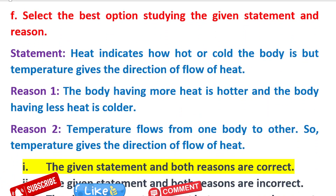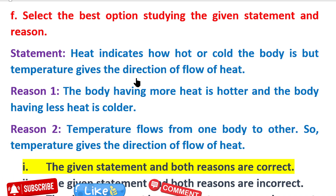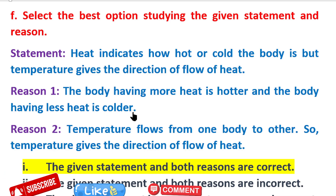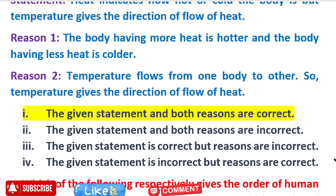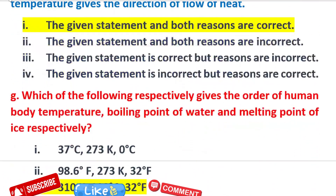Select the best option by studying the given statement and reason. The statement is: heat indicates how hot or cold the body is, and temperature gives us the direction of the flow of heat. Reason 1: the body having more heat is hotter and the body having less heat is cooler. Reason 2: temperature flows from one body to the other, so temperature gives the direction of the flow of heat. The statement and both reasons are correct, but some reasons may be incorrect.